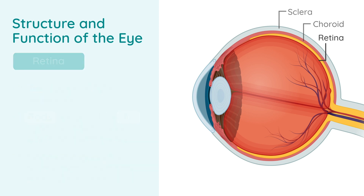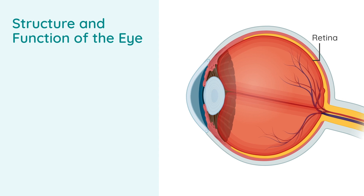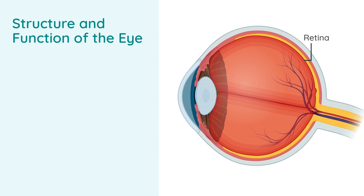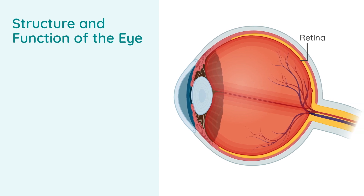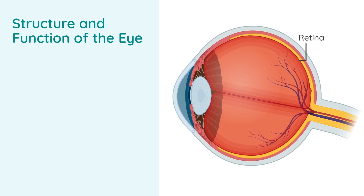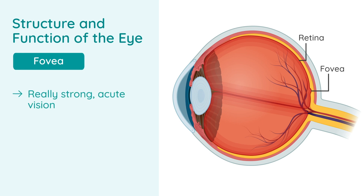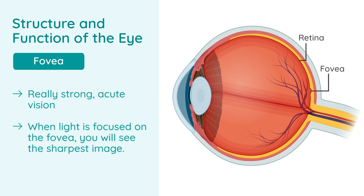At the back of the eyeball, on the retina, there is a concentration of lots of cones. This area is called the fovea because it has really strong, acute vision — it gives you the sharpest vision. So when light is focused onto the fovea, you will see the sharpest image.